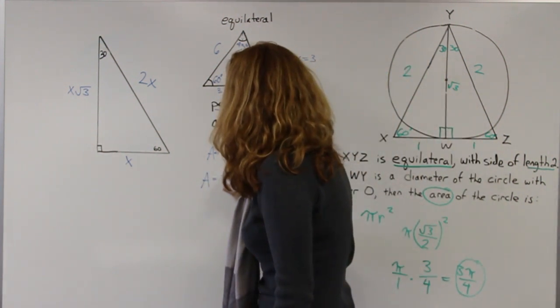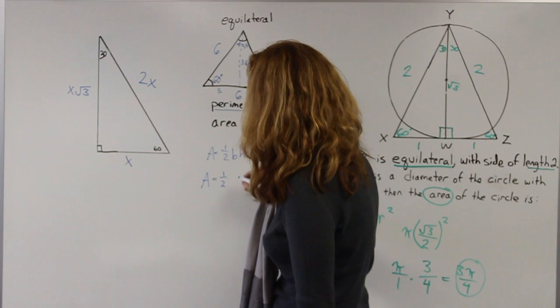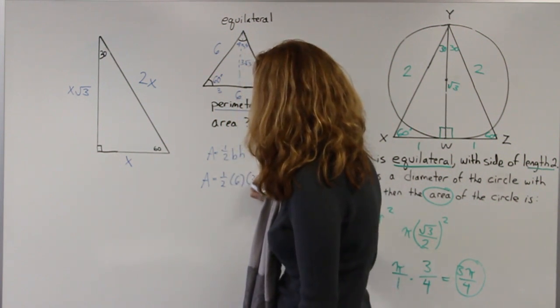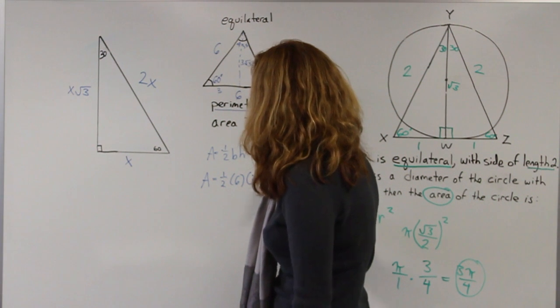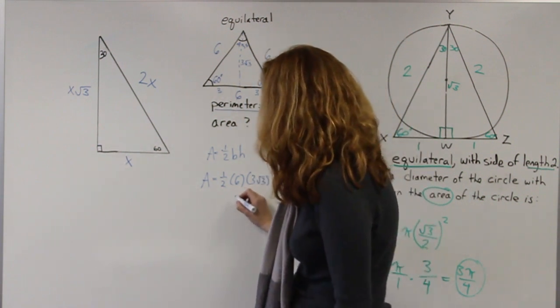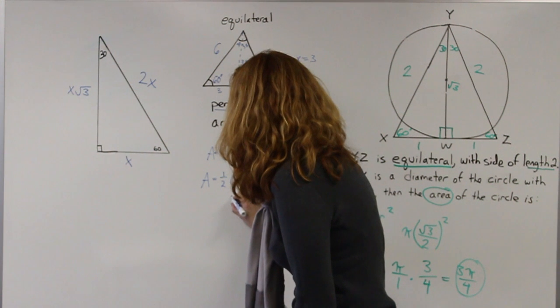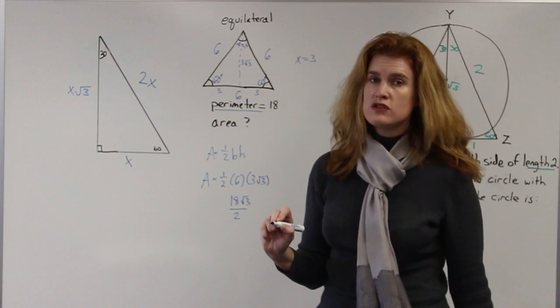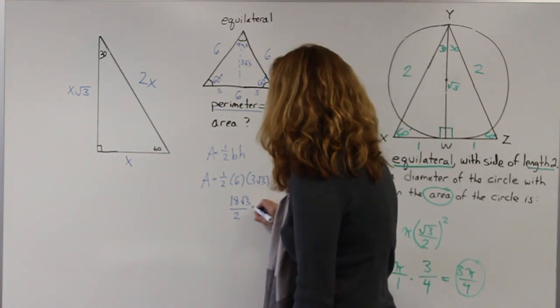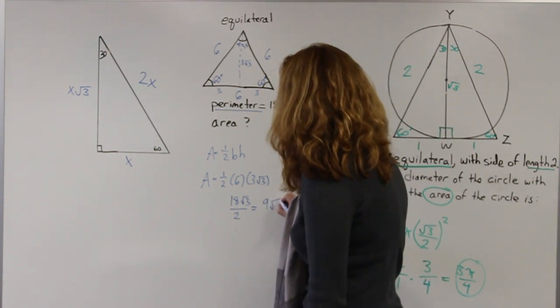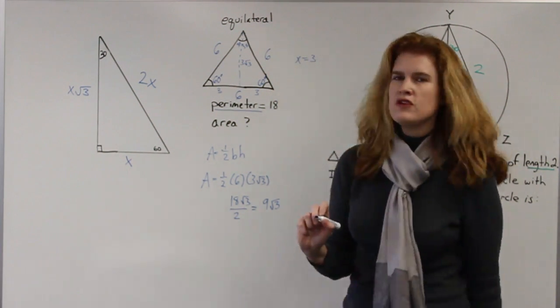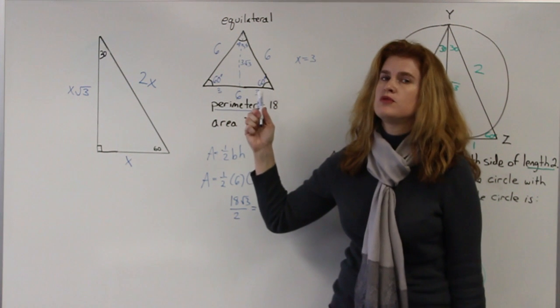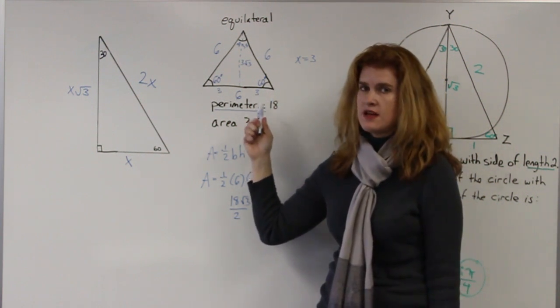So we have area equals 1 half base, which is 6, times height, which is 3 root 3. Put that together, we have area equals 18 root 3 over 2, which reduces further to 9 root 3. So you can see how important it is to really know this concept well. Make sure that you know it well before test day.